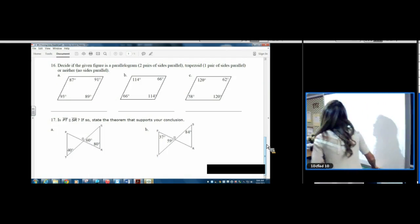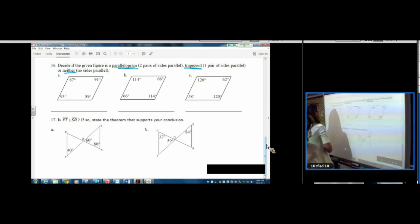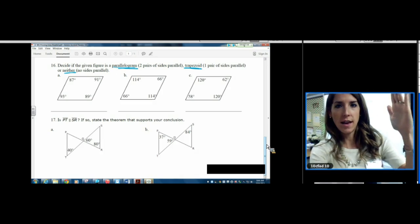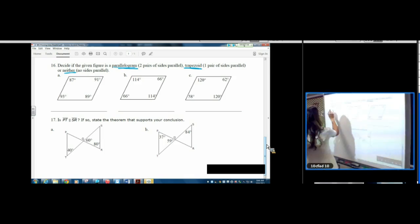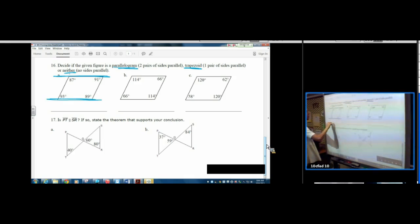Number 16. Decide if it's a parallelogram, a trapezoid, or neither. So you need to look at two sides at a time. You can look at the top and the bottom, or you can look at the left and the right. Let's look at the top and the bottom. So I'm going to zoom in. I'm going to really look at the top and the bottom.